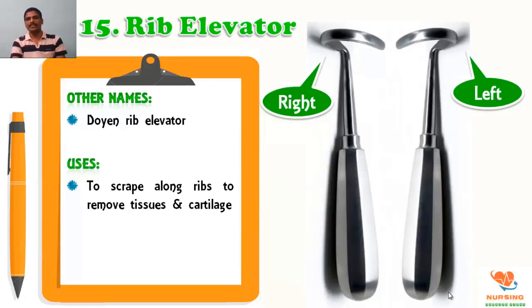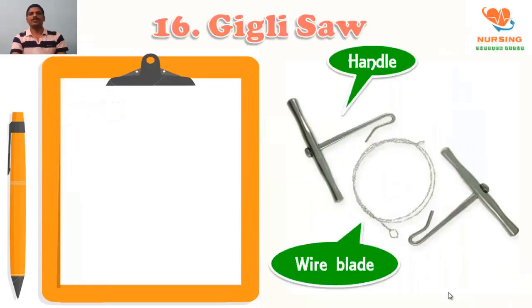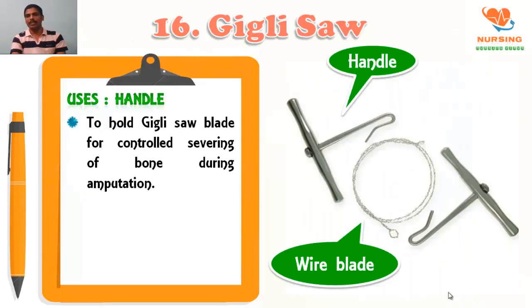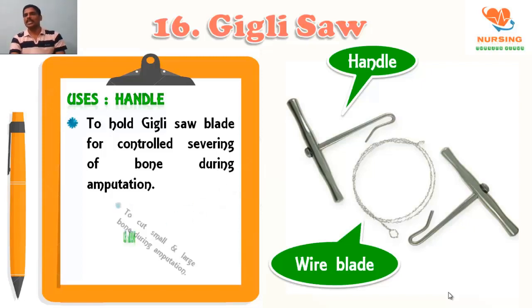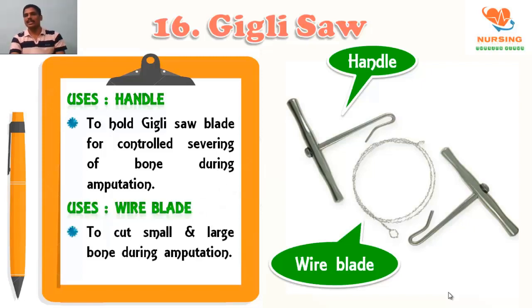You can see right and left Gigli saw handle, used to hold the Gigli saw blades for controlled sawing of bone during amputation. Wire blade is used to cut the small and large bone during amputation. On the picture you can see two handles and one wire blade.